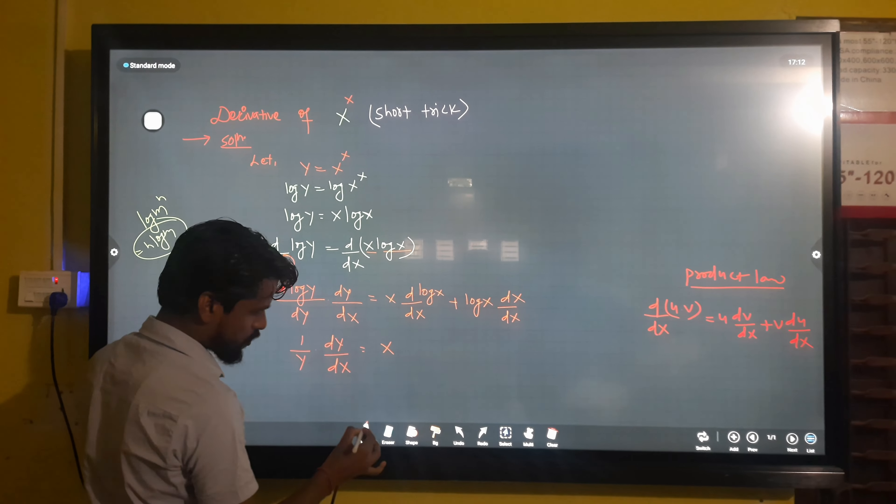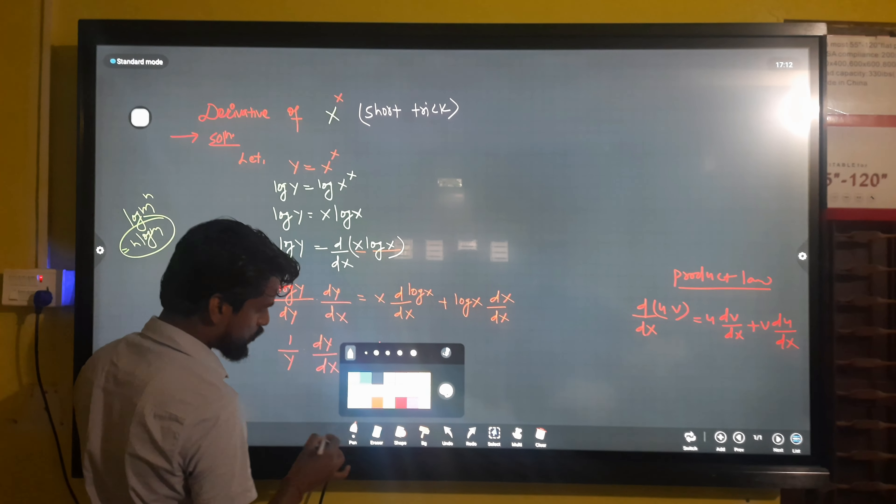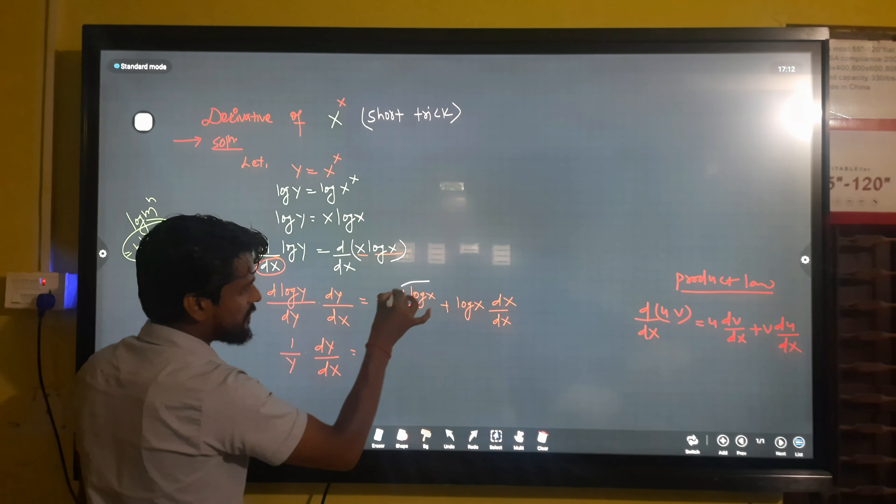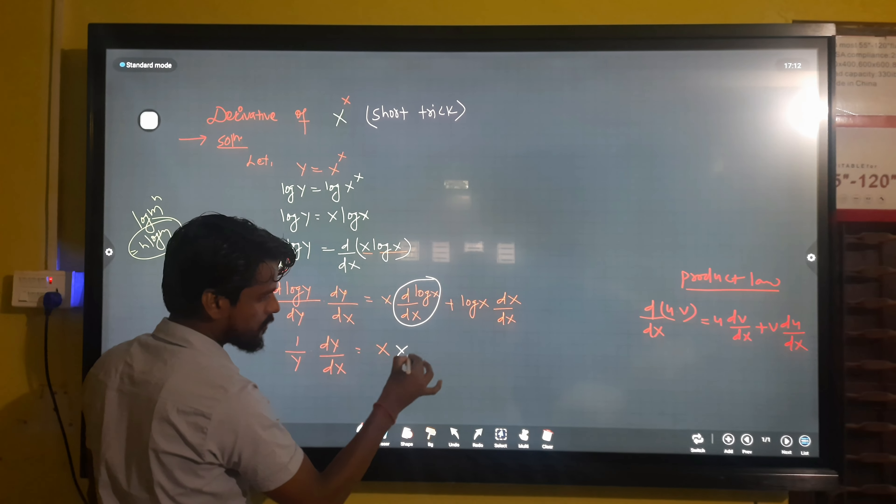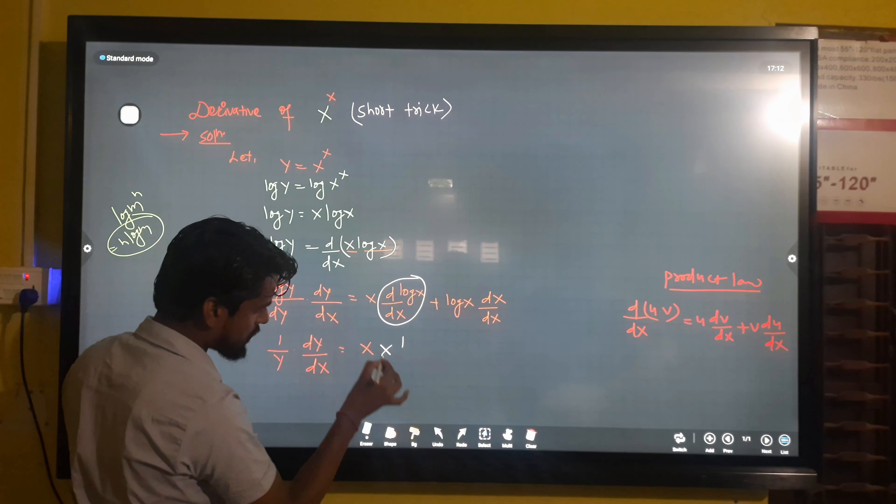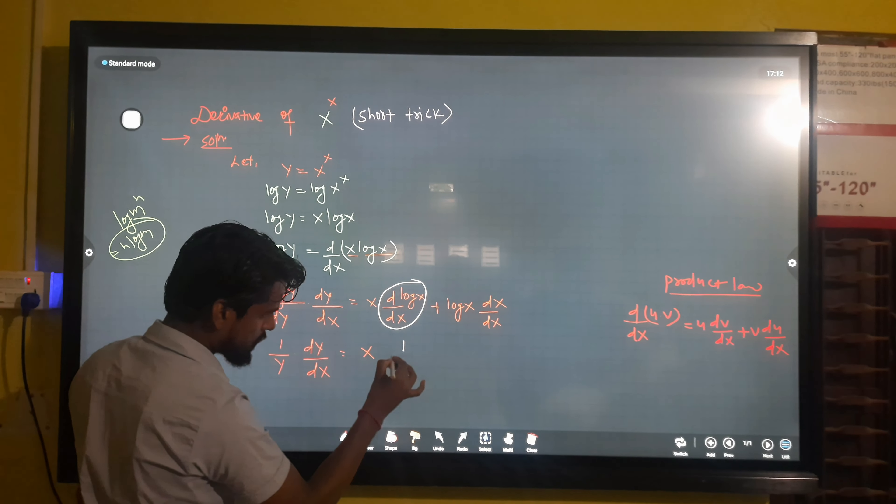One by y dy by dx equals x times the derivative of log x. The derivative of log x is one by x, so one by x.